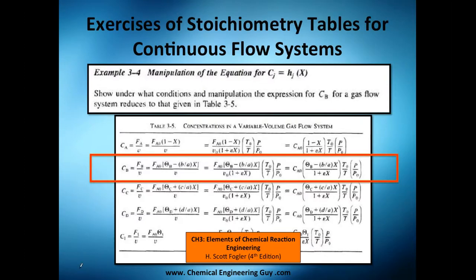What's up guys, we've seen before how to calculate stoichiometric equations for continuous flow systems in gas phase. So let's do an exercise about that and we're going to manipulate the equation. They tell you show under what conditions and manipulation, what kind of math do you use for the expression of concentration of B for a gas flow system that reduces to that given in table 3-5.